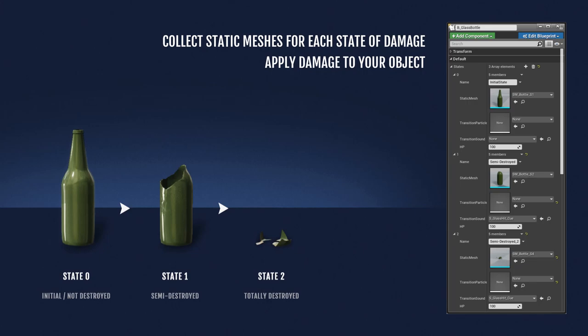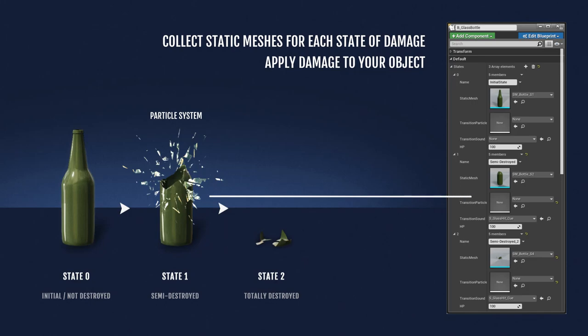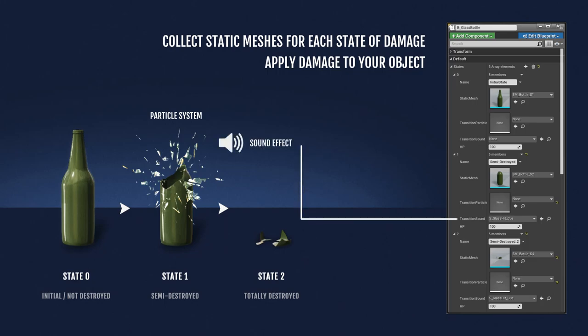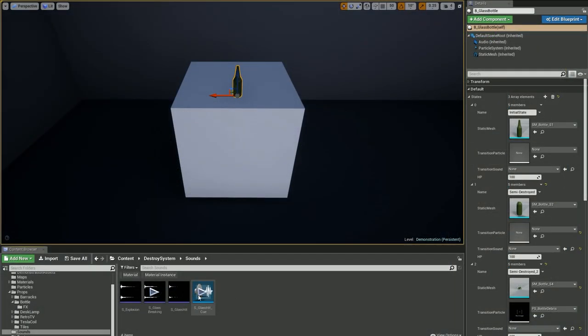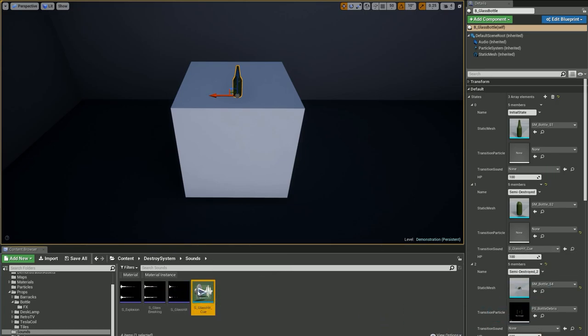To make a smoother transition between states, or make it less noticeable, you can introduce particle systems, and it's pretty simple. A particle emitter is activated once the object changes its state. Additionally, transition sound effects are supported. In our example, a particle system with flying tiny glass pieces and a glass breaking sound effect will do the job.